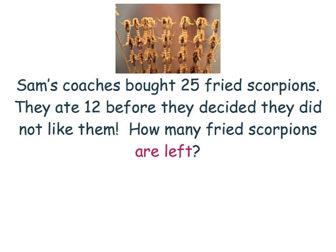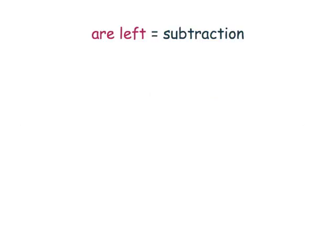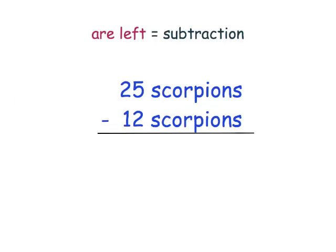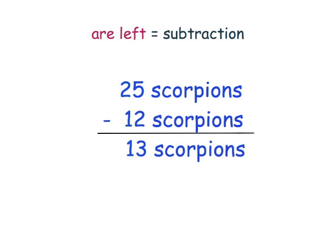Just like the first problem, let's figure out which math operation to use. The words 'are left' mean the same as subtraction. Our next step is to figure out what we are subtracting. It looks like they had 25 scorpions and ate 12, so I am going to set up the problem 25 minus 12. Starting in the ones column: 5 minus 2 equals 3. Next, I subtract the numbers in the tens column: 2 minus 1 equals 1. The coaches had 13 scorpions left.